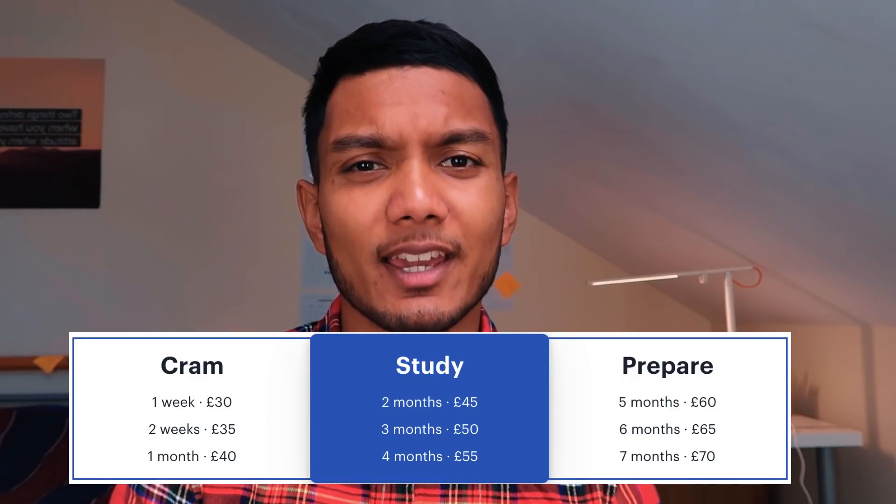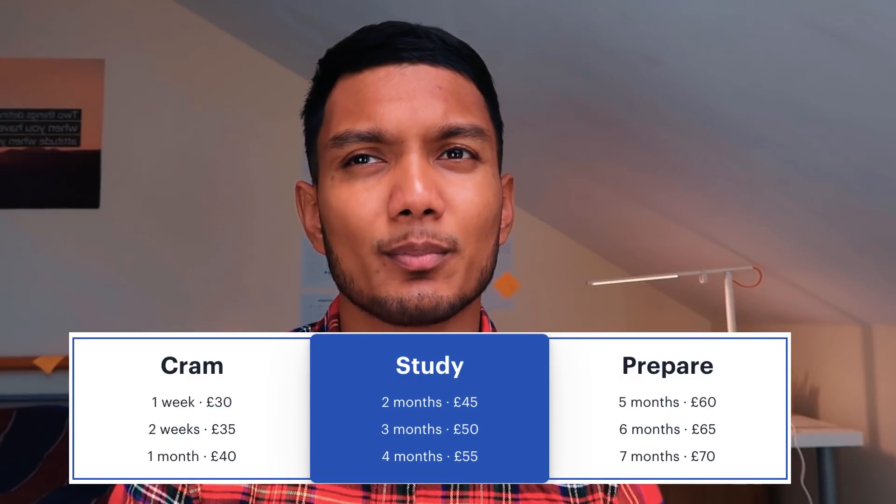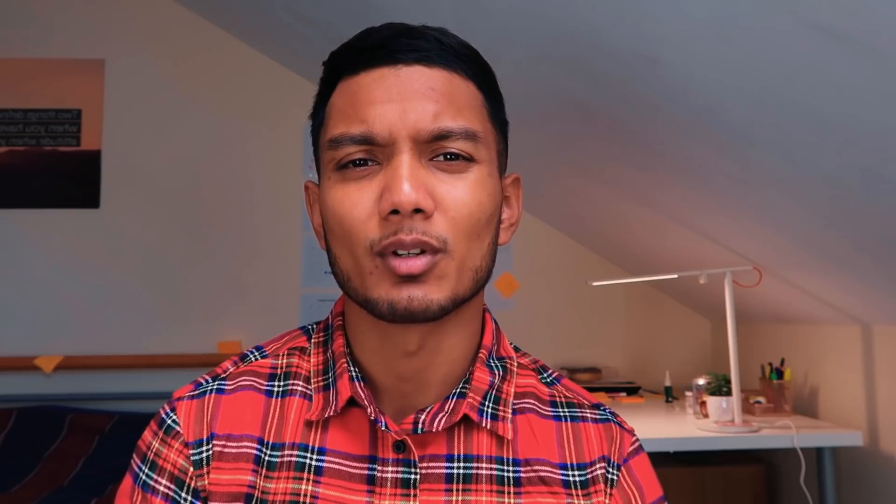In terms of pricing: one week costs £30, one month costs £40, two months costs £45, five months costs £60, and a year costs £95. It's quite flexible depending on how long you want to subscribe, though I'm not sure I'd want to prepare for the UCAT over a full year.